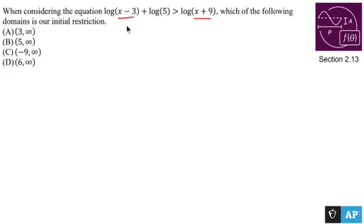So I'm not allowed to plug in 3, but I'm also not allowed to plug in anything less than 3 or equal to it. So in this case, my domain for this is I'm only allowed to plug in things that are greater than 3.